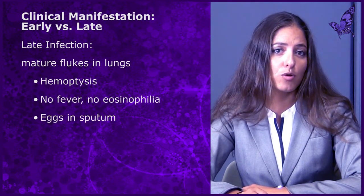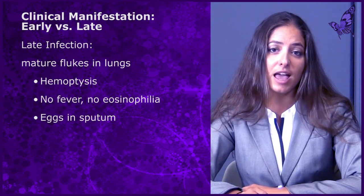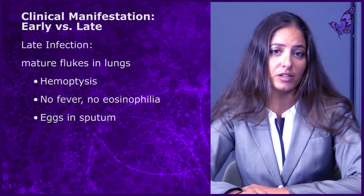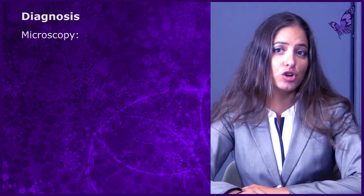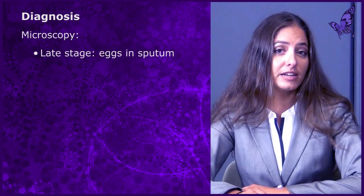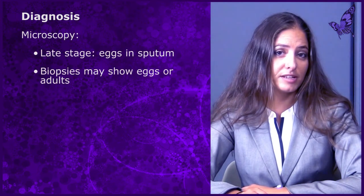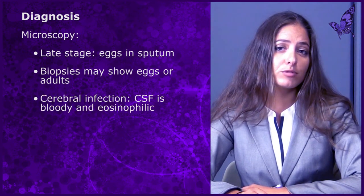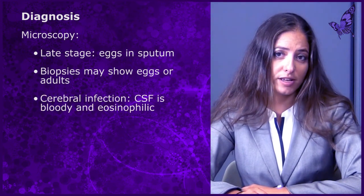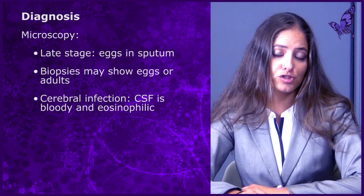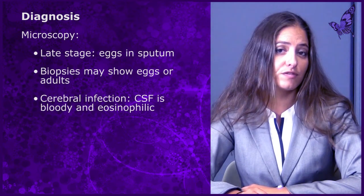Diagnosis of lung flukes is made using microscopy, serology, imaging, and a careful patient history. Microscopy shows eggs in sputum during late infections, biopsies may show lung fluke eggs or adults, and if cerebral infection is present, lumbar puncture will show bloody CSF and eosinophilia.